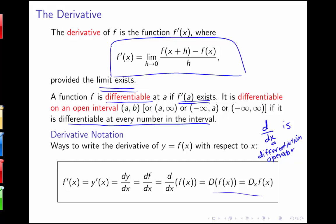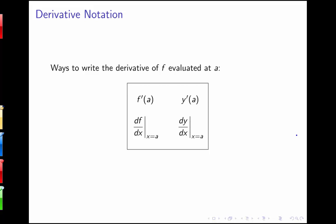One more thing on notation: to connect this back with our derivative at a point, if I want to find the derivative of a function evaluated at a, I'll write f prime of a or y prime of a. Or using Leibniz notation, I'll say the derivative of f with respect to x evaluated at x equals a — that bar is an evaluation bar telling you what point you're plugging in. Similarly, dy/dx evaluated at x equals a.